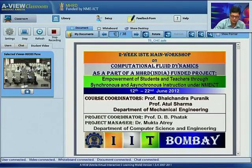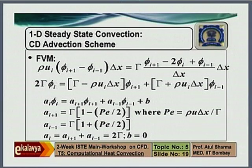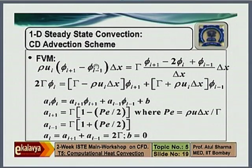M.K.S.S. Pune, please ask your question. Good afternoon, sir. Please open topic number 5, slide 19. The Peclet number is coming as rho u delta x by gamma — where are these two terms coming from?